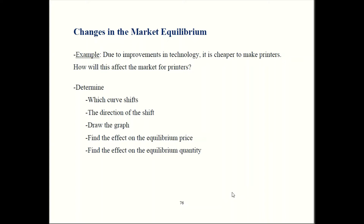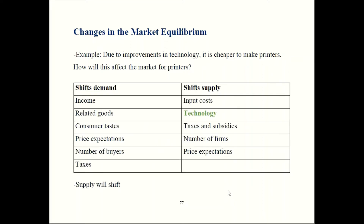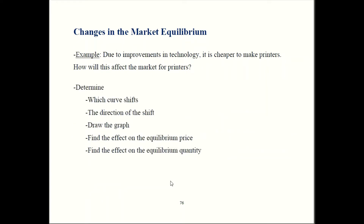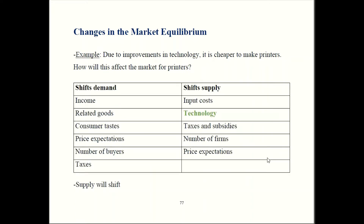Alright, I'll assume you have done that. We go to our list of which factors shift which curve. We said we had improvements in technology, and technology was on our list of supply shifters from an earlier episode. So now we know which curve shifts. The next step is to figure out which direction it will shift. If it's now cheaper to make printers, that's going to lead to an increase in supply.